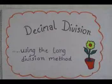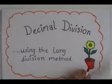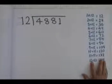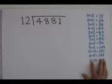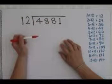Decimal division using the long division method. With decimal division we will not end up with a remainder at the end of our sum. We will end up with a decimal number.